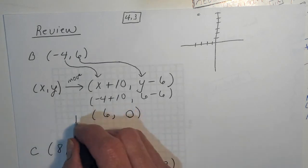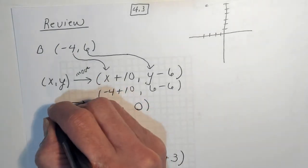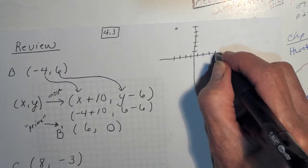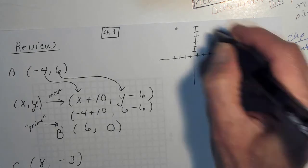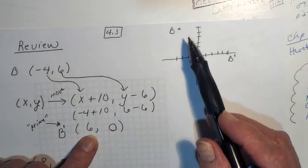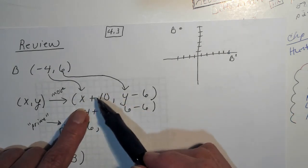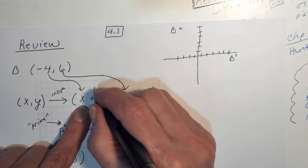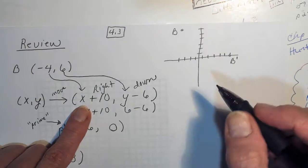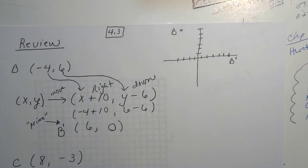Our new point isn't called B anymore — it's called B prime. When you see that little tick mark, we say prime. So here's B and here's B prime. Some of you might not want to do the algebra and just use your graph — that's wonderful. When you're adding, that means go to the right. When you're subtracting, that means go down. So some of you might have just said: I'm going 10 to the right and down 6. Either way, we'll get you the answer.